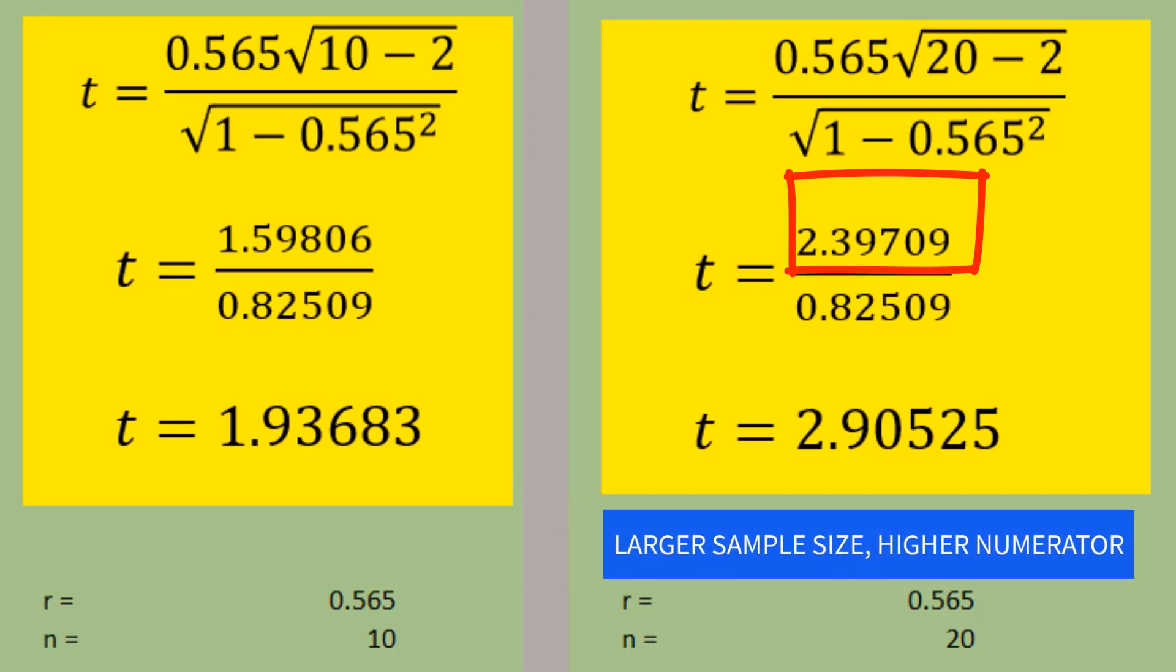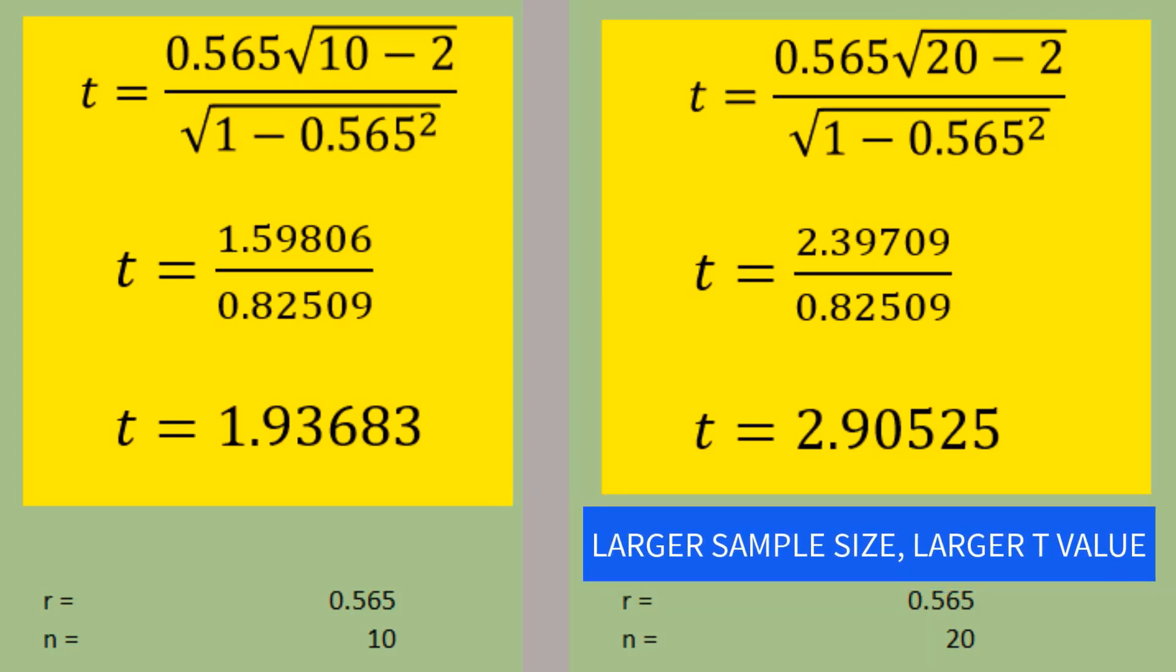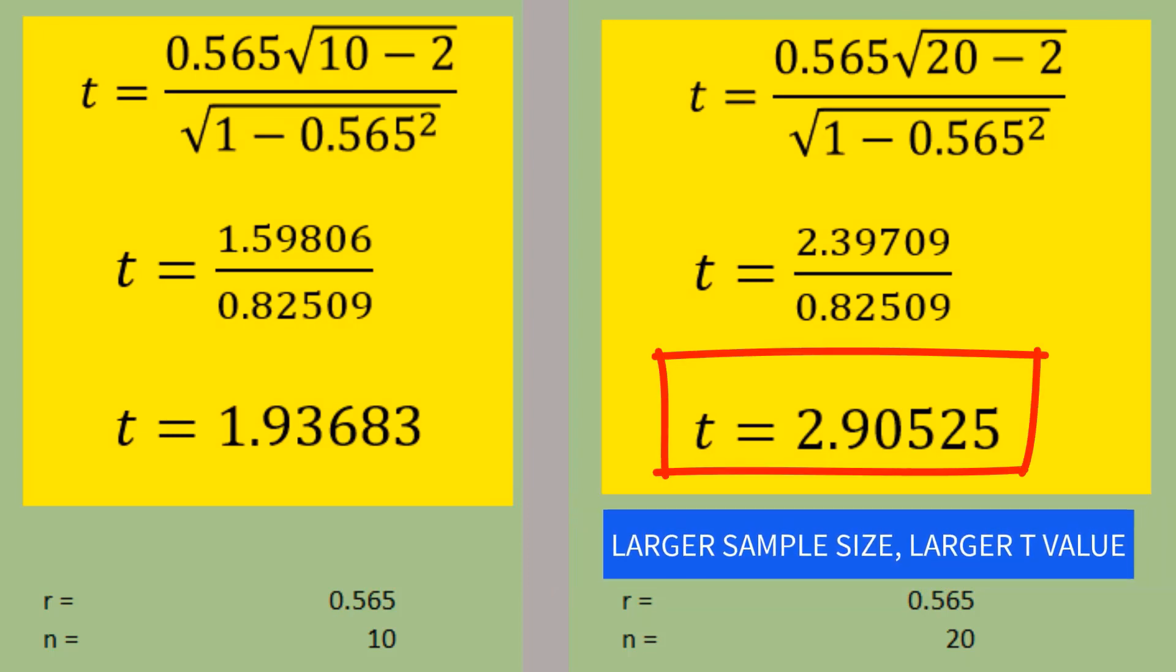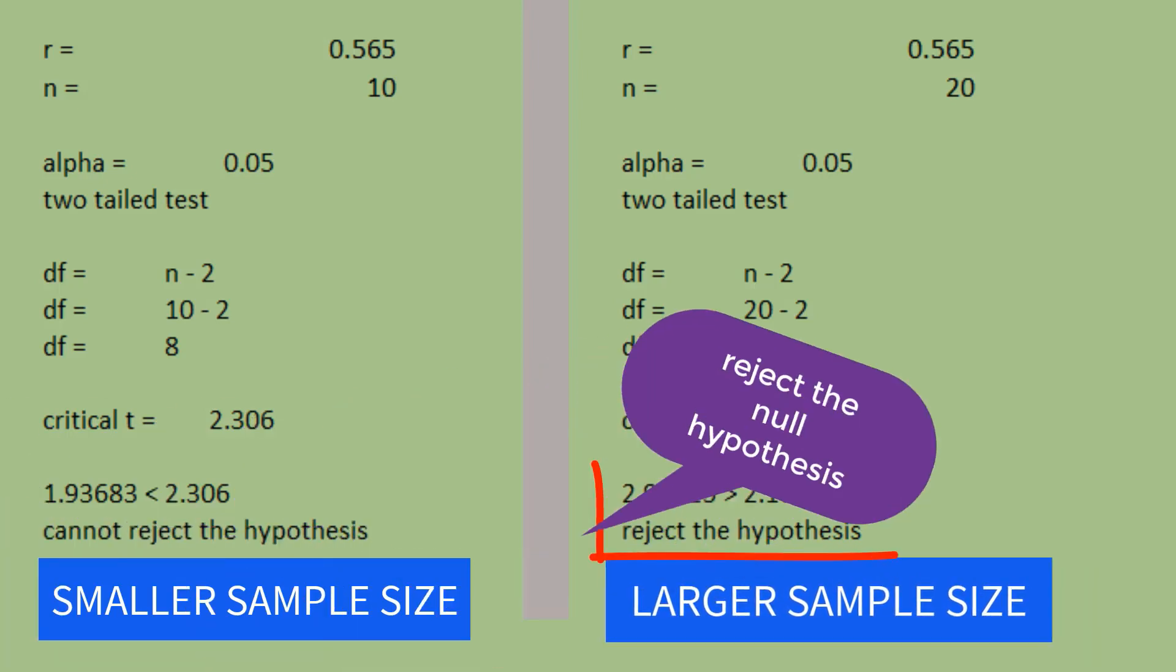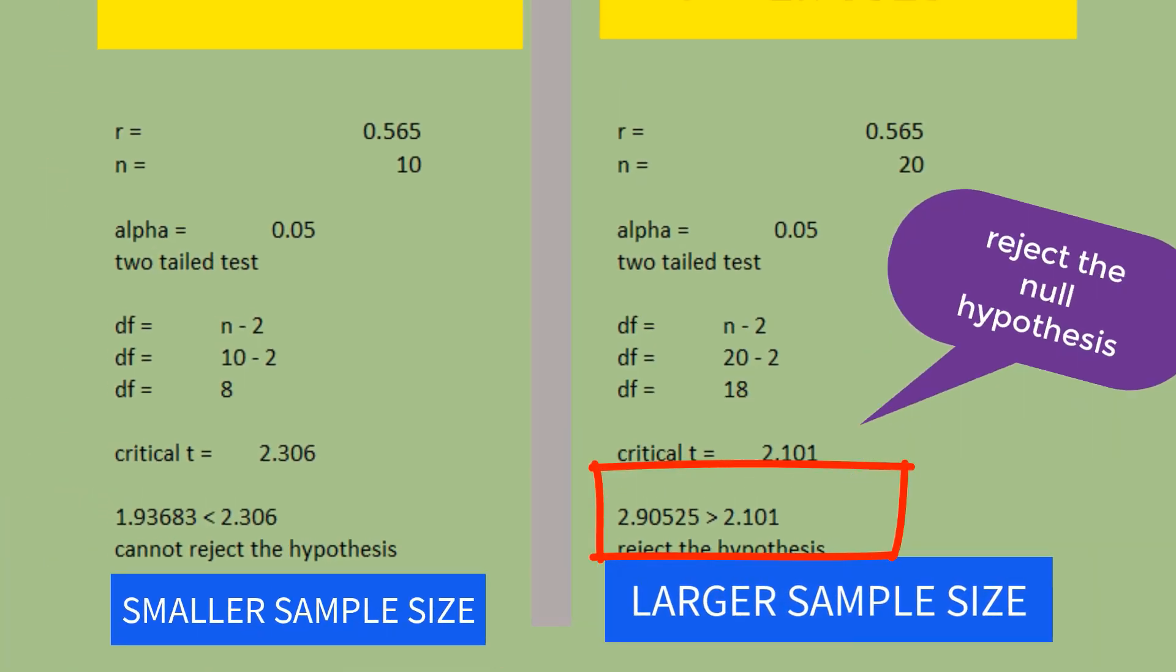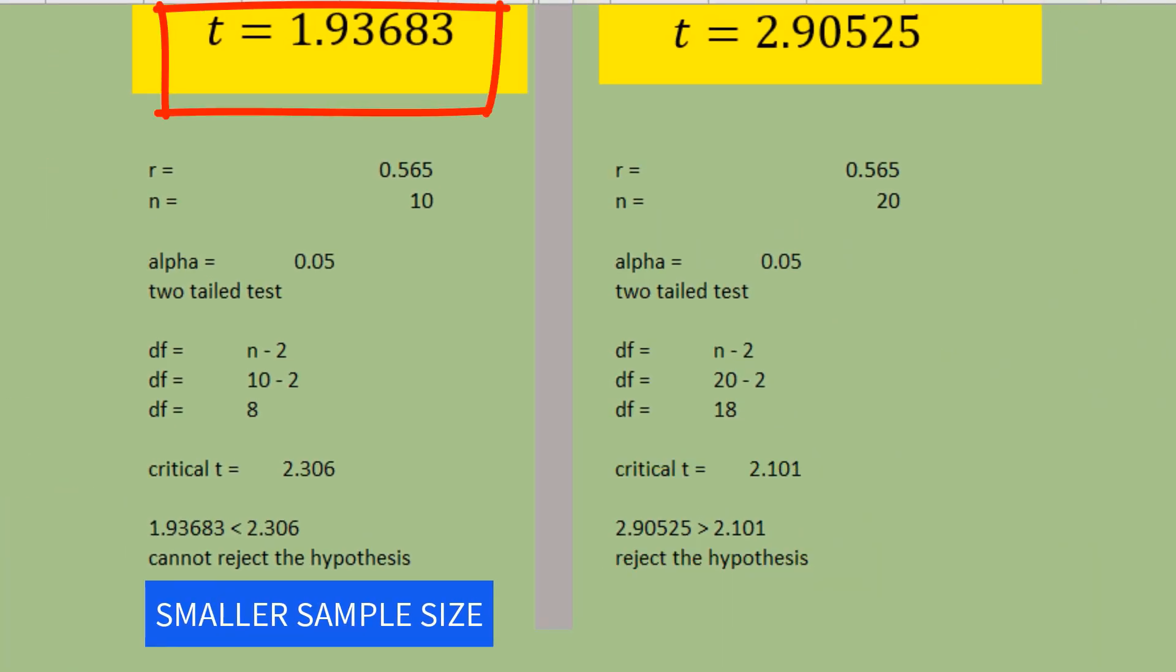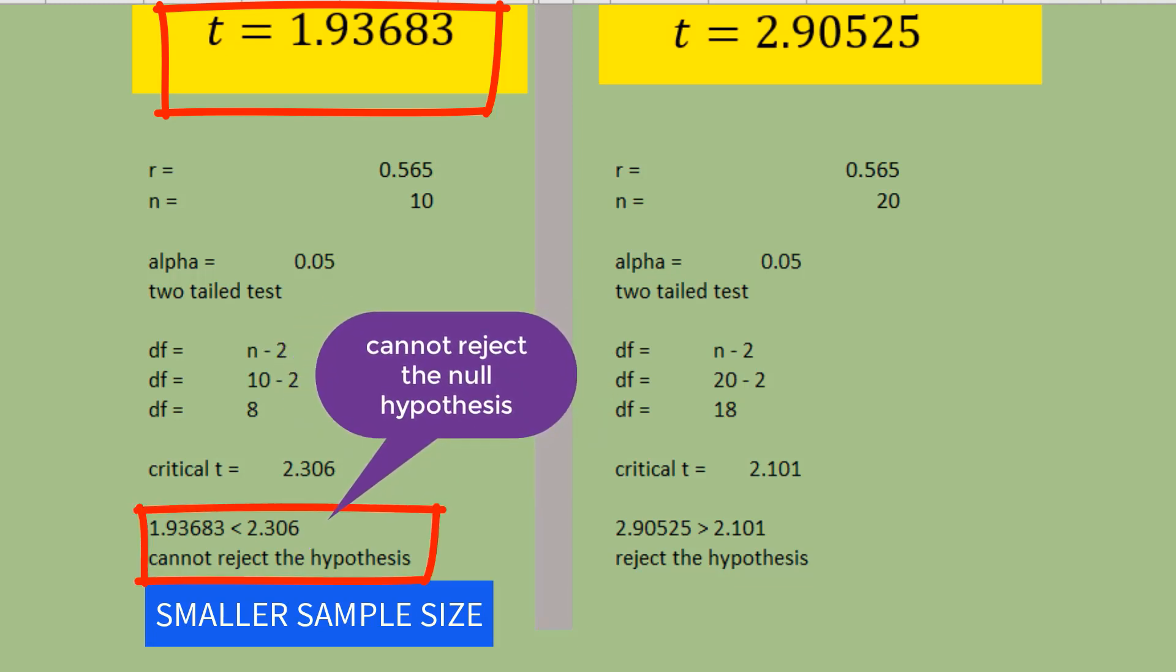The one with the larger sample of 20 generates a higher t-value of 2.90525, which results in rejecting the null hypothesis. The one with the smaller sample size of 10 generates a lower t-value of 1.93683, which results in not rejecting the null hypothesis.